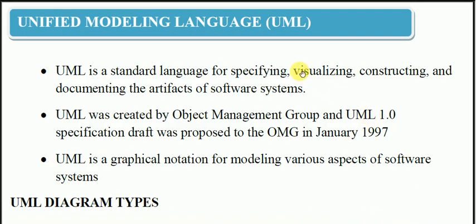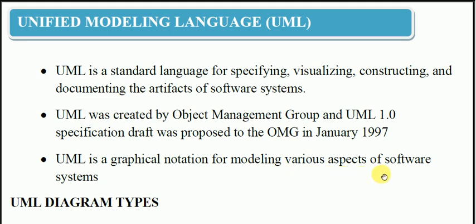UML stands for Unified Modeling Language. UML is a standard language for specifying, visualizing, constructing and documenting the artifacts of the software system. UML was created by Object Management Group and UML 1.0 specification draft was proposed to OMG in January 1997. That UML version 1.0 was published in 1997. After that, version 2.0 is in use. UML is a graphical notation for modeling various aspects of the software system.